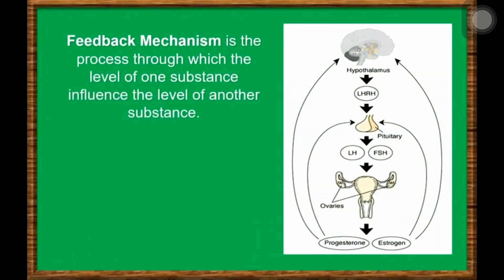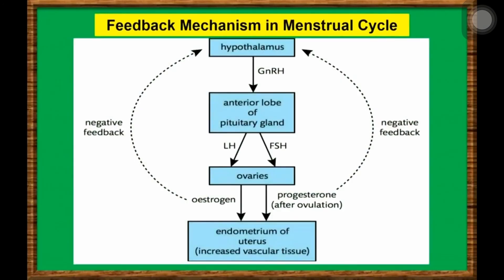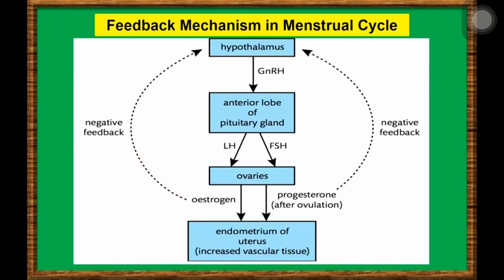Feedback mechanism is the process through which the level of one substance influences the level of another substance. Here is an example of a negative feedback mechanism in the menstrual cycle. The follicle-stimulating hormone, or FSH, stimulates the ovaries to release estrogen. High levels of estrogen then prevent the further production of FSH.